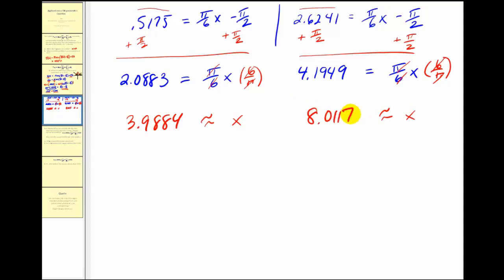So this is very close to four, which would be April. And this is very close to eight, which would be August. So these would be the two months where we'd expect the water temperature to be sixty two point four degrees.